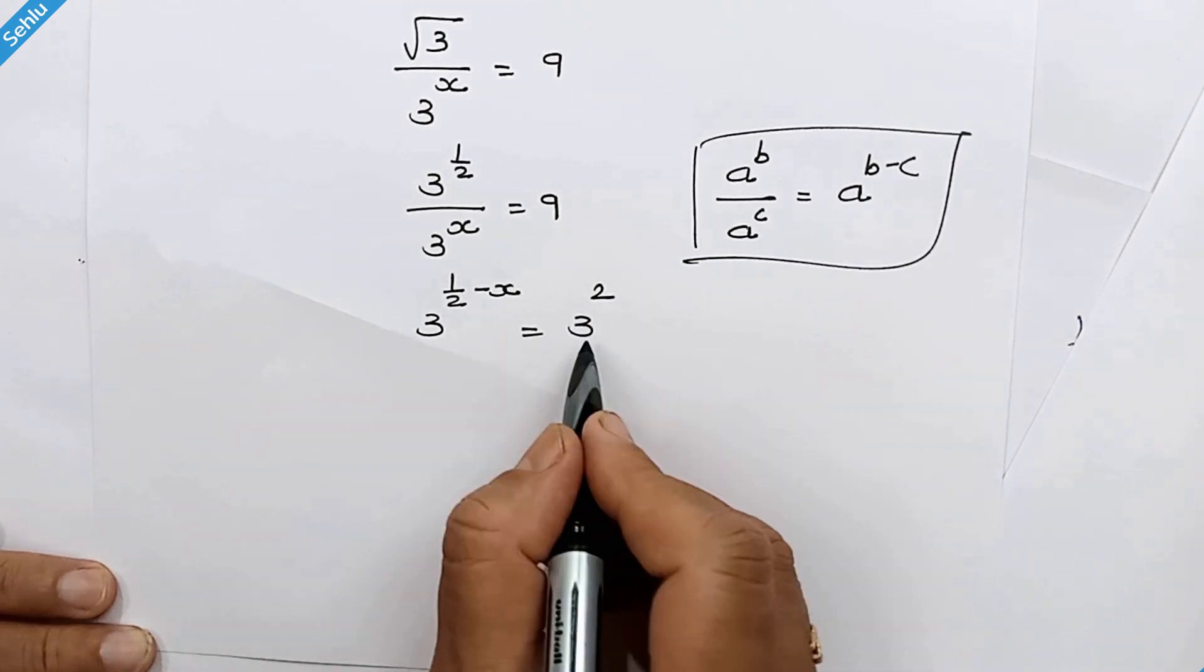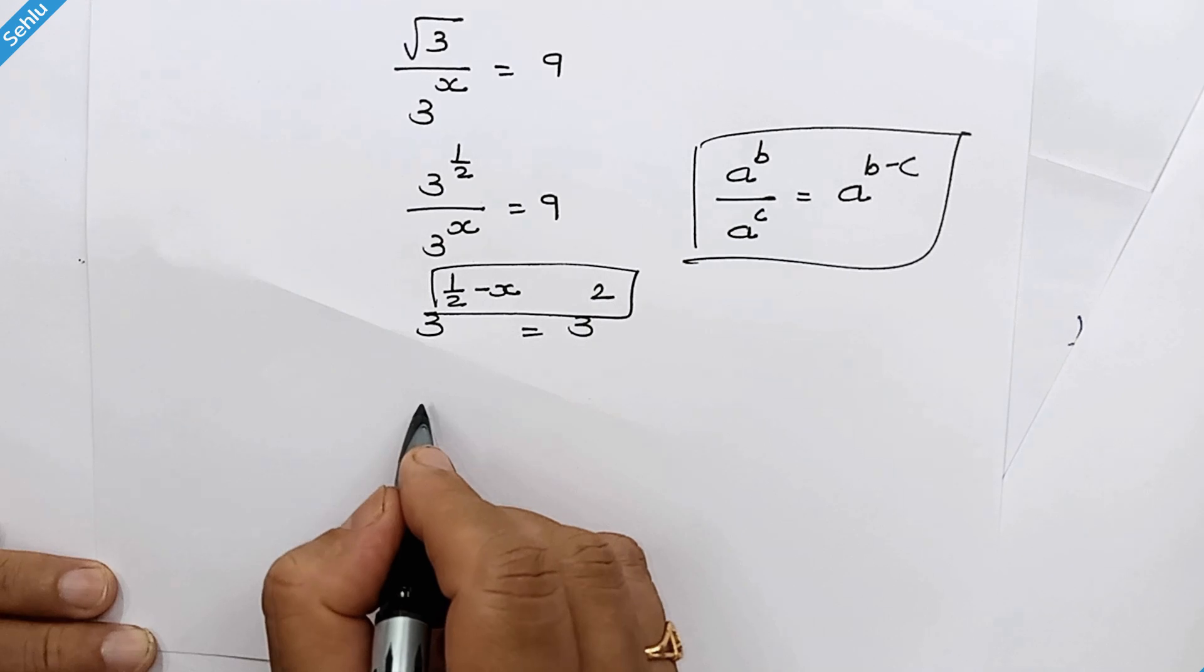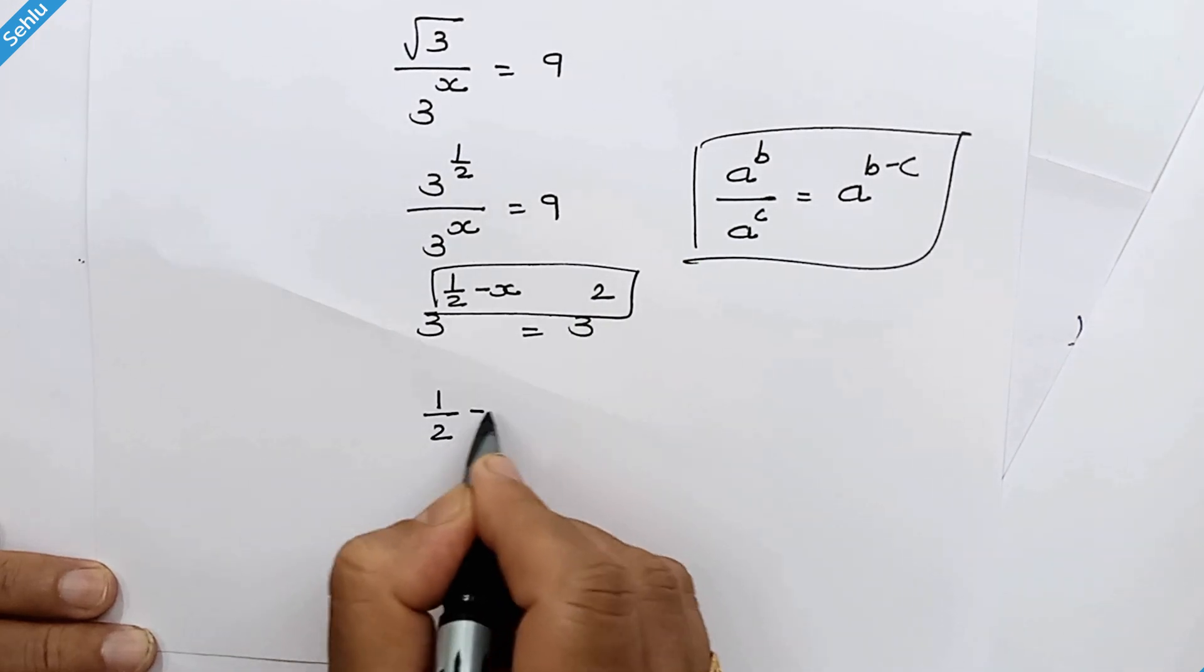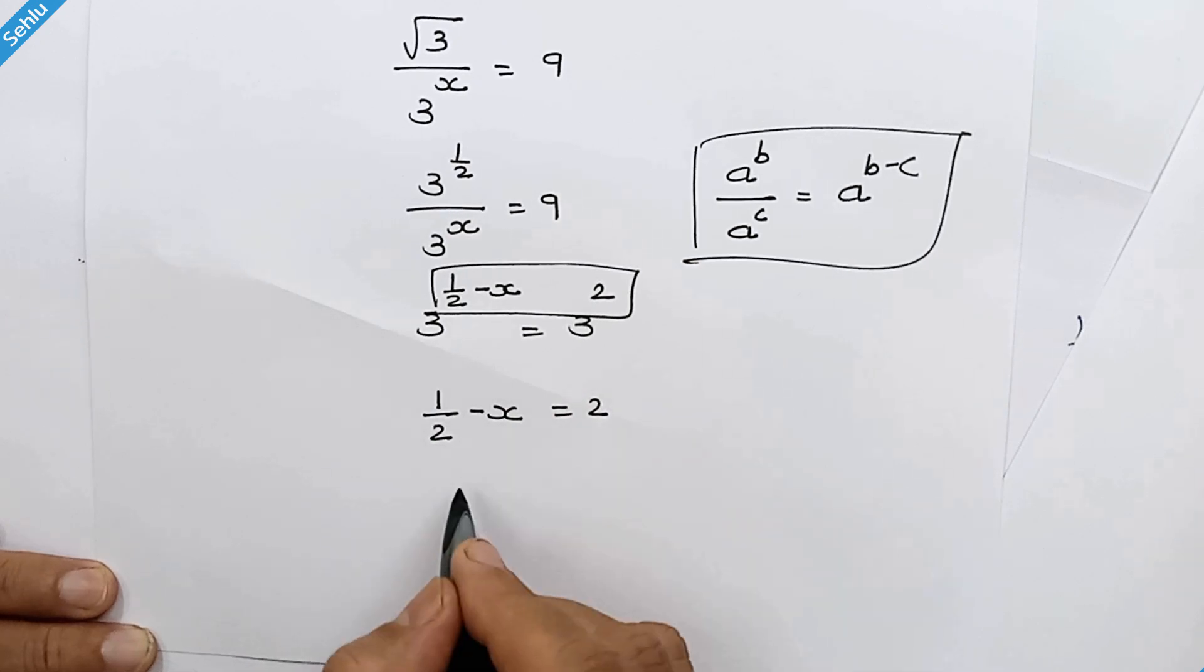We have same base both sides. So we can equate these two, their exponents. So 1 over 2 minus x is equal to 2. Moving this to the right hand side.